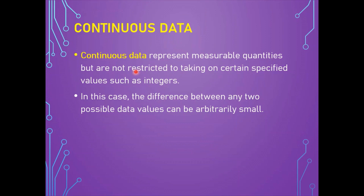Continuous data represents measurable quantities but is not restricted to certain specified values such as integers. On the contrary to discrete data, the difference between any two possible data values can be arbitrarily small. Examples of continuous data include time, the serum cholesterol level of a patient, the concentration of a pollutant, and temperature — in all instances, fractional values are possible. Since we can measure the distance between two observations in a meaningful way, arithmetic operations can be applied. The only limiting factor is the degree of accuracy with which it can be measured.